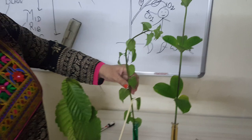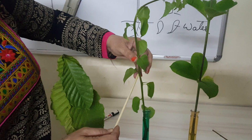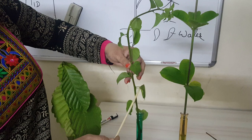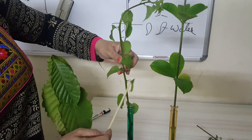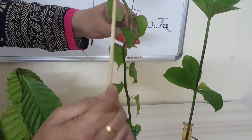If you look at this tree, this is the node from where a leaf is arising. You could see another node with another leaf arising. However, there is no opposite leaf in the opposite direction, so this is not an opposite arrangement. The leaves are arranged in an alternate way — one here, second one here, third, fourth, and so on. This is known as the alternate arrangement of the leaf.